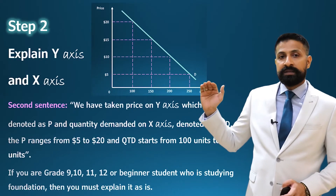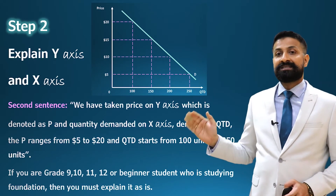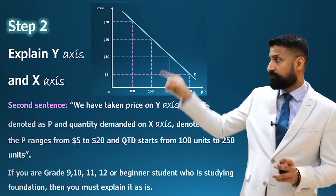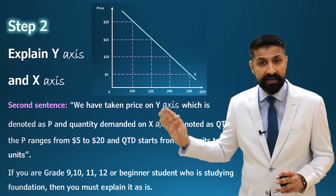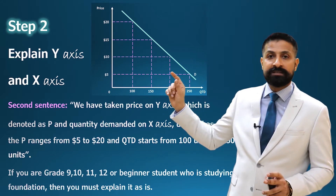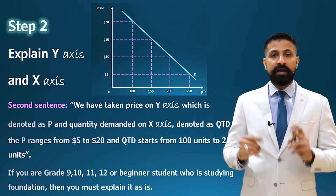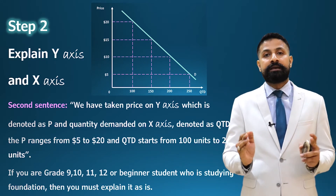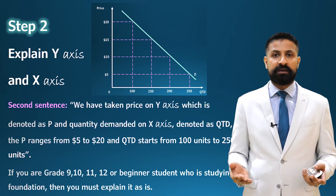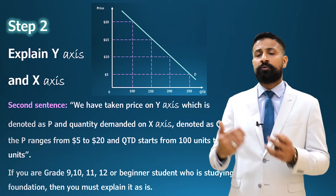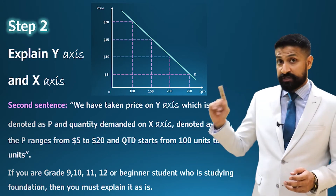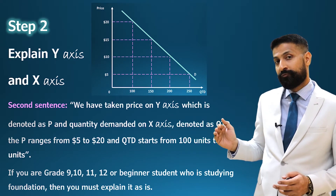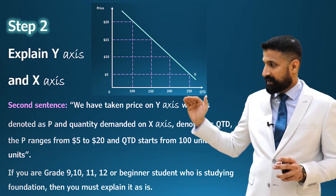Step number two: explain what you have taken on the y-axis and x-axis. In the second sentence you explain both. You say: 'We have taken price on y-axis, which is denoted as P' — it is important to mention how price is denoted. 'And quantity demanded on x-axis, denoted as QTD.' You can also write Q or QD, but most preferably QTD. Then mention the range: 'It ranges from 5 to 20, and 100 to 250.'